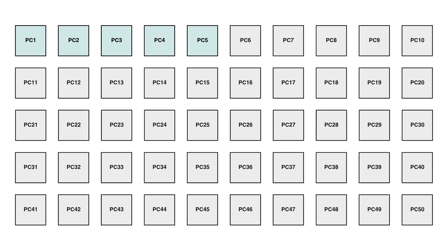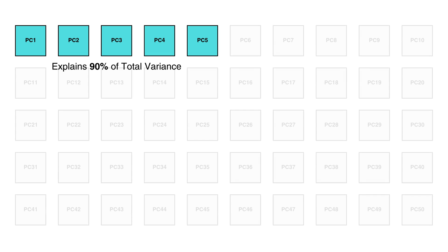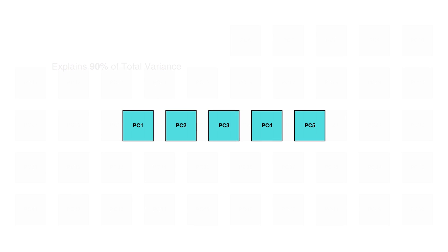For example, say you started with 50 different features in your dataset. After running PCA you'd get 50 principal components. But thanks to this ranking, you might find that the first five components alone capture say 90% of the total variance. This means instead of working with all 50 original features, you can reduce the dimensionality to just five components and still preserve most of the important information.